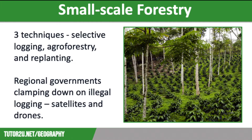Our second technique is agroforestry. This technique involves growing crops and trees together. Farmers grow crops in carefully controlled, cleared areas within the rainforest, surrounded by plantations of trees. Annual food crops and tree crops, such as coconuts, are planted. Agroforestry can control runoff and soil erosion, thereby reducing losses of water, soil material, organic matter and nutrients.